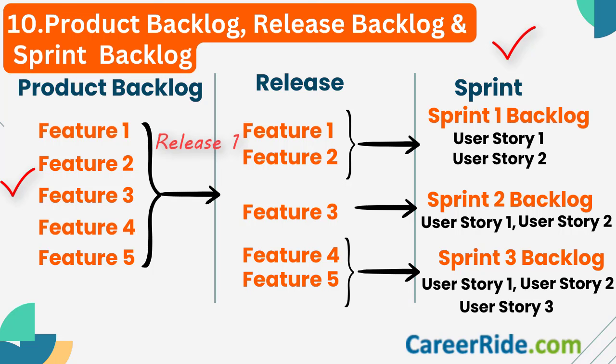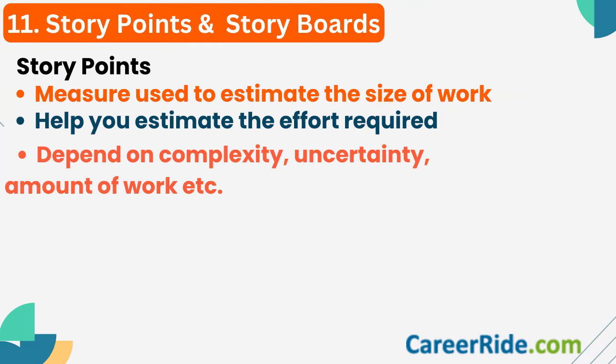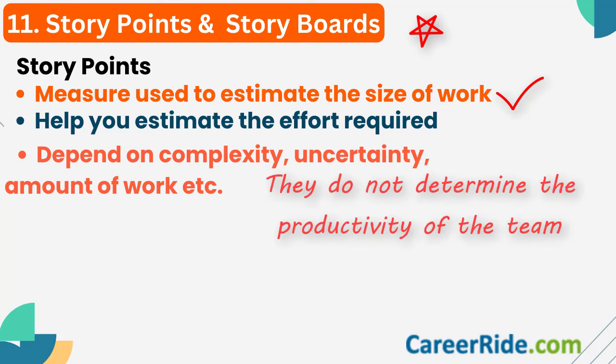Sprint backlog, as you can see in the diagram, are the user stories or a focused list of tasks you plan to complete during a specific sprint. Question number 11: what are story points and story boards in Scrum? Story points are numerical values used to estimate the size of work in a project and sprint. They do not determine the productivity of a team — they help in estimating the total effort required in implementing the product backlog, based on task complexity, amount of work, and uncertainties involved.